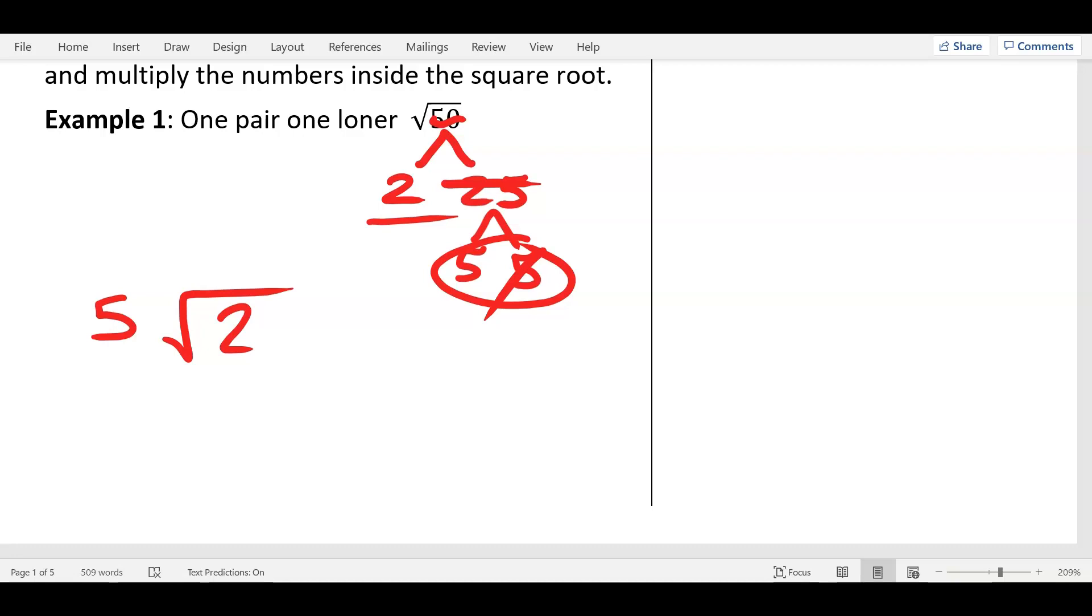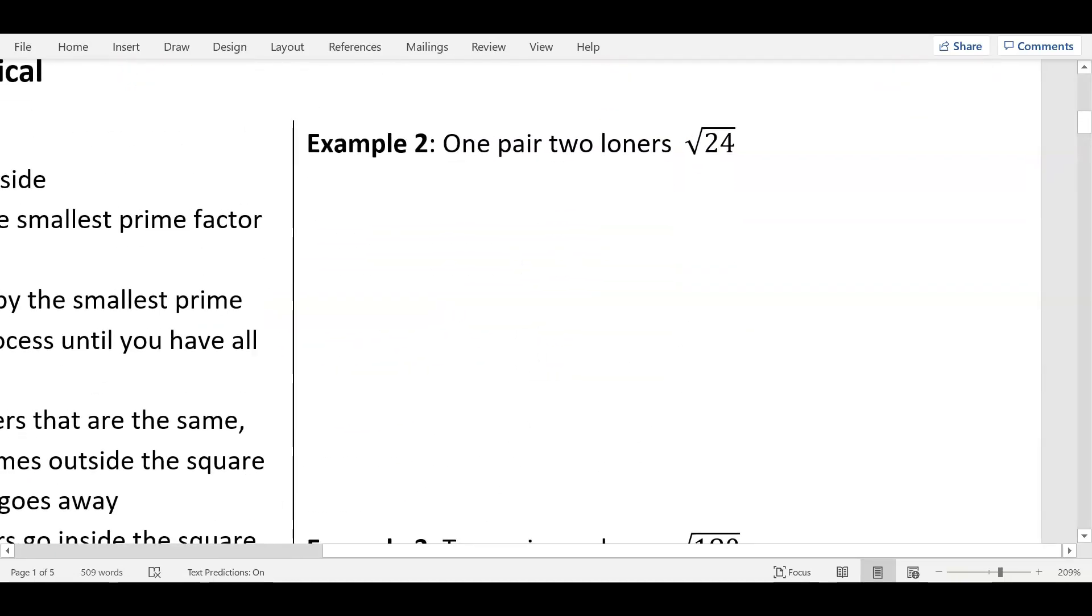Now there's different variations of this. So let's look at example two. What did we do first on example one? Got to break it down. Factor tree. Let's do a factor tree, everybody. 24 is even. What do I always have to start with? Two. So always try two. Does two go into 24? Two times 12. But since I broke it down, what do I got to do here? Cross out 24, please. Two is prime, leave it alone. 12 is not prime. Break it down. Always start with two. Does two go into 12? If it's even, it's yes. Two times six. 12 goes away. Two is prime. Six, it's even. Once again, break it down by two. Two times three. Cross out the six. And three is also prime.